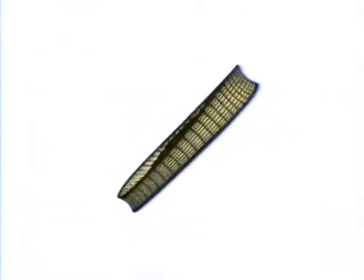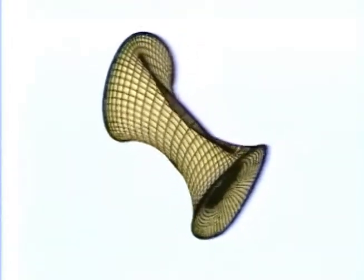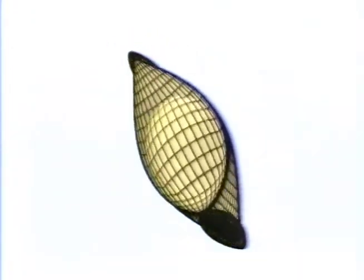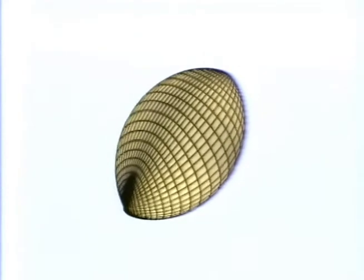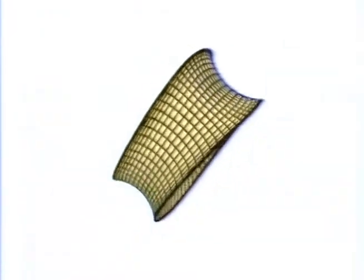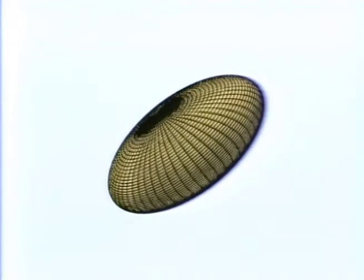Extending the concept of parallel curves to two dimensions yields parallel surfaces. As before, move each point of the surface a fixed distance along its normal. Shown here are parallel surfaces to an ellipsoid with three axes of unequal lengths. They have been rescaled so that each image always fills the whole screen, and they are rotating gently. Note that the surface passes through itself and turns itself inside out during this process.